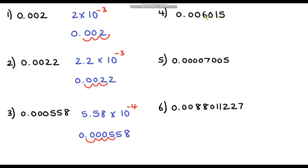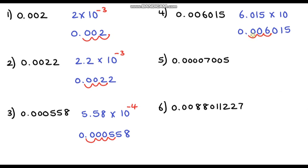Question four: 0.006015. Our base number is 6.015, so it's 6.015 multiplied by 10. Starting between the six and the zero, we go one, two, three places to the left — so again we get negative three as our power. It's just a coincidence that so many of these are negative three.